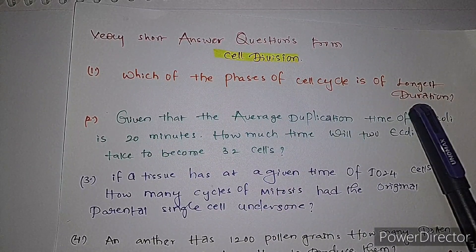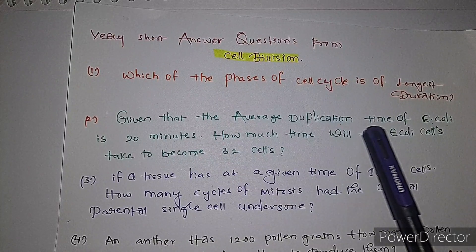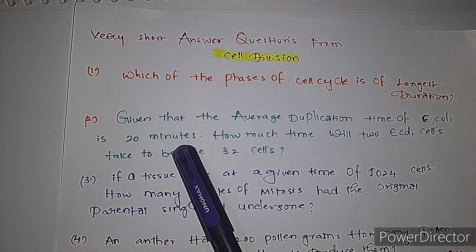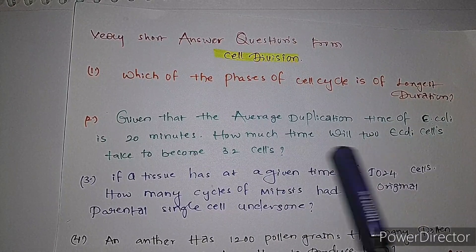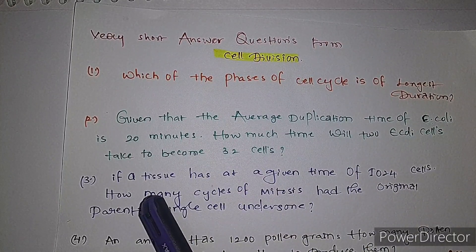Second question: given that the average duplication time of E. coli is 20 minutes, how much time will two E. coli cells take to become 32 cells? Third question: if your tissue has at a given time 1024 cells, how many cycles of mitosis had the original parental single cell undergone?